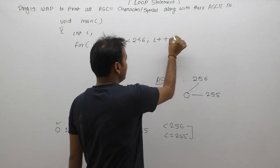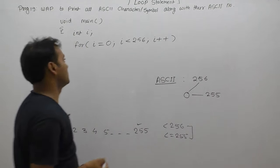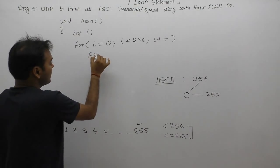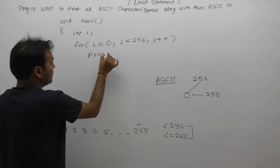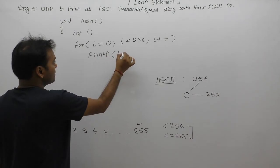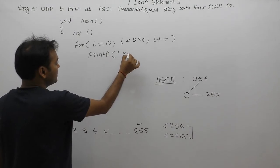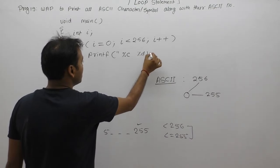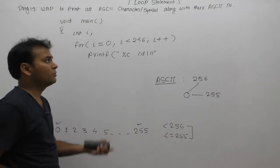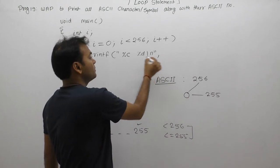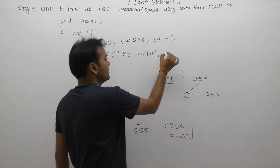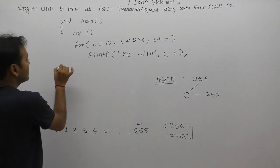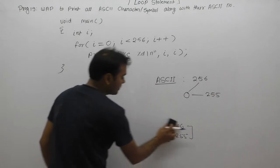In the for loop body, what do we need to display? Character and its ASCII value. To display character value, use %c. To print ASCII value, use %d. This is the complete program.